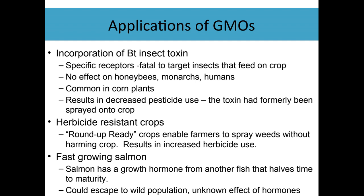GMO corn is so common because they've been putting this Bt toxin in so that they can use less pesticides. This has resulted in a decrease in pesticide use, because formerly they were using this exact same toxin and spraying it on the plants — now it's growing inside the plant. So they're not spraying it on every plant, not getting it into the wind and onto everything in the field and all the other weeds and flowers nearby; it's really just in the crop you're growing.